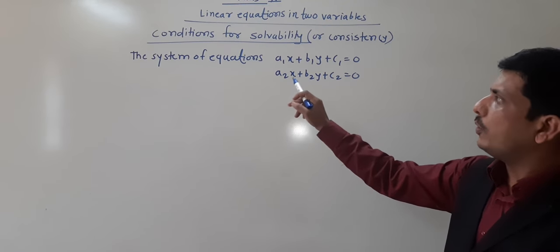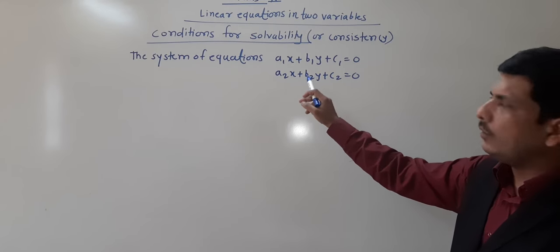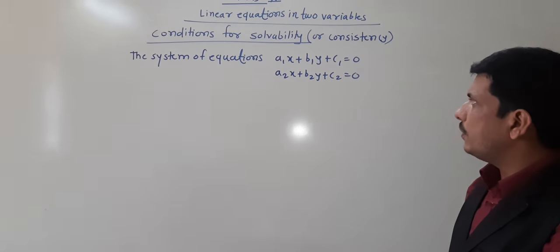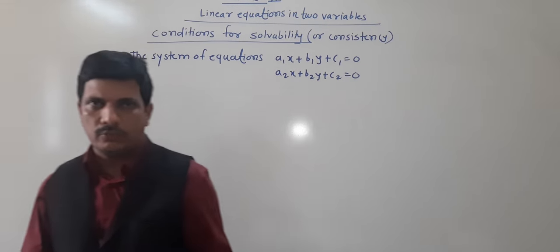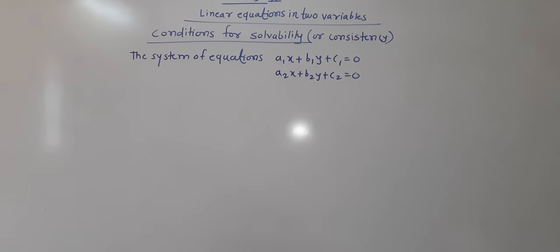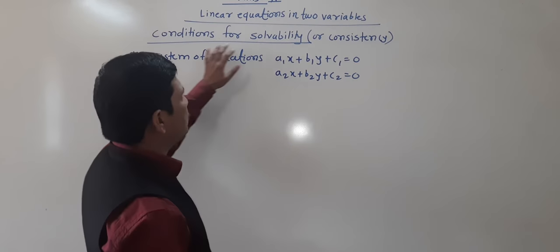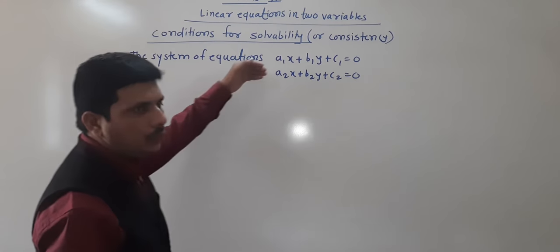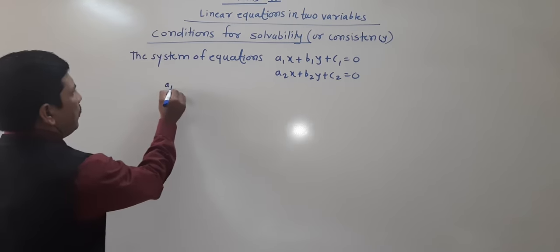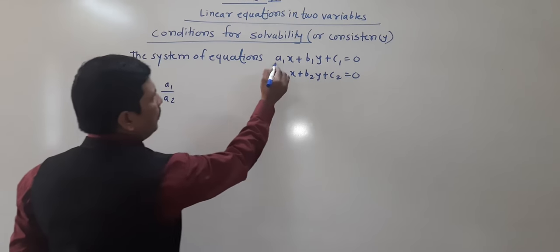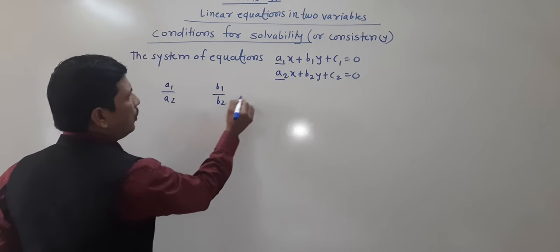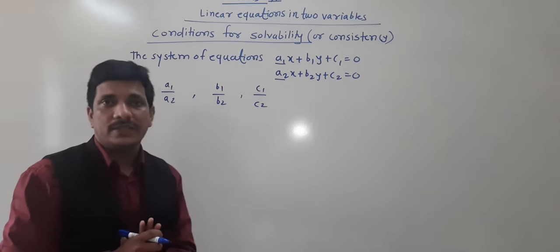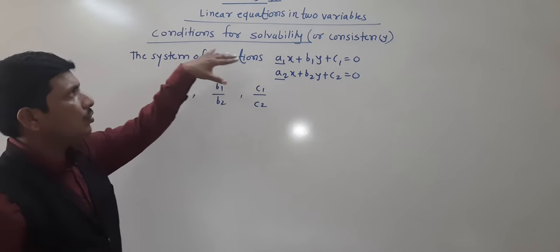Here the system of equations — two equations are given: a1x + b1y + c1 = 0 and a2x + b2y + c2 = 0. We have to check the conditions of solubility. There are three ratios we need to use: a1/a2, b1/b2, and c1/c2. With the help of these three ratios, we are going to decide the conditions of solubility.